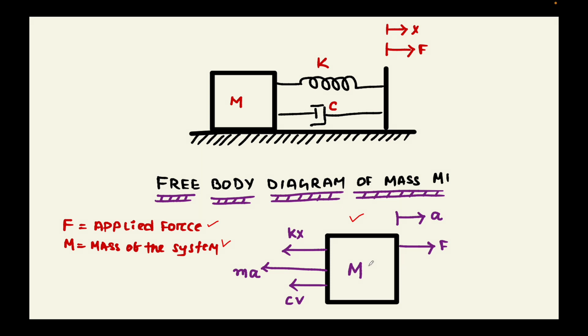In the free body diagram, first we consider the mass and also give the directions at which the arrows should be appearing, and also give the direction of the applied force. Applied force is in this direction. Correspondingly, the mass into acceleration will be generated in the opposite direction as per Newton's second law.